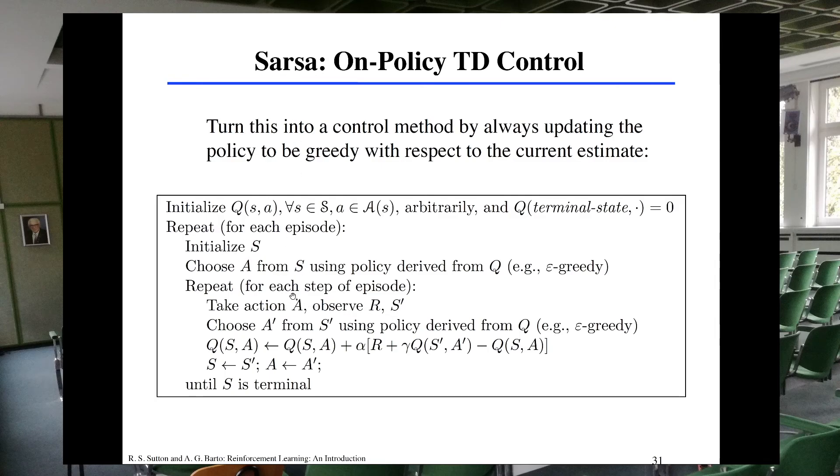In SARSA what you do is you initialize your Q function, so you will assign a value for each of the combinations of the states and actions. Then you have a loop, and this loop refers to each of the episodes you will generate, it requires many episodes. You initialize the state, and then you choose the action to be executed from that state, using the policy that you are following. You can implement this using the Epsilon Greedy policy for example.